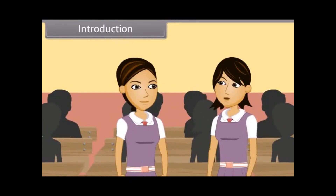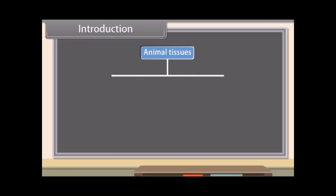Ankita, as we have already discussed earlier, animals are heterotrophic organisms. They cannot synthesize their own food, so they have to move in search of it. They also have to move in search of meat, shelter and other vital activities of life. For the accurate performance of vital activities, there are various tissues for every activity. On the basis of their functions, animal tissues are of four types.